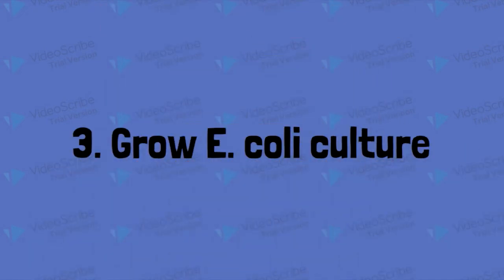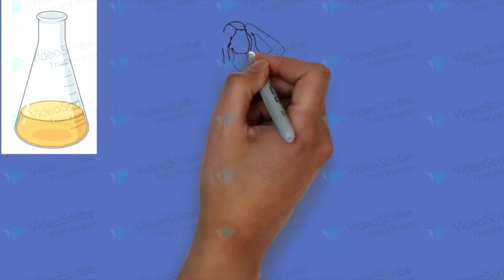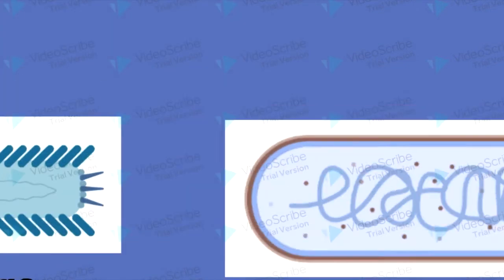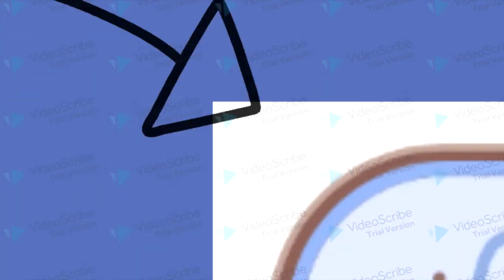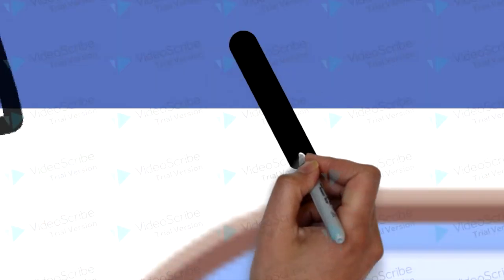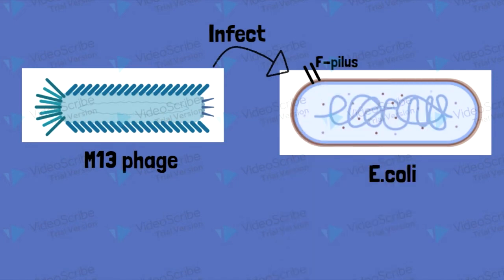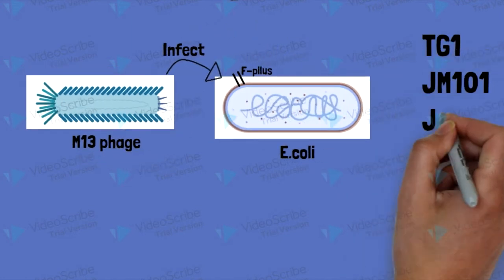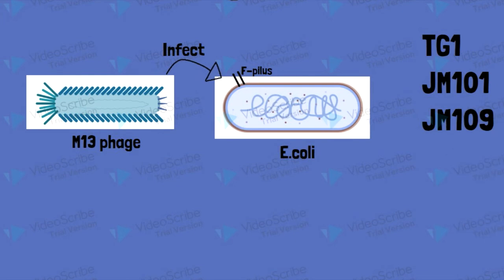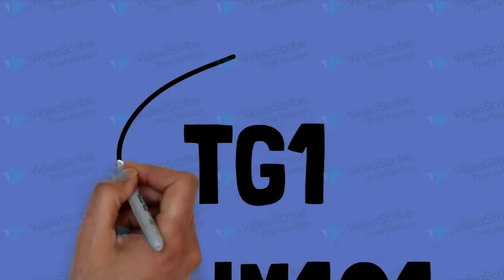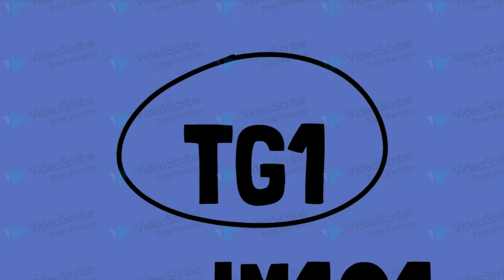The third step is to grow an E. coli culture. Since there are many E. coli strains available, we need to choose the right one. In order for M13 phage to infect an E. coli cell, the cell must have a structure known as the F pilus, to which the M13 phage attaches before penetrating into the cell. Therefore, host strains must carry the F pilus. Examples of E. coli strains with F pilus are TG1, JM101, and JM109. We will use TG1 as our example.